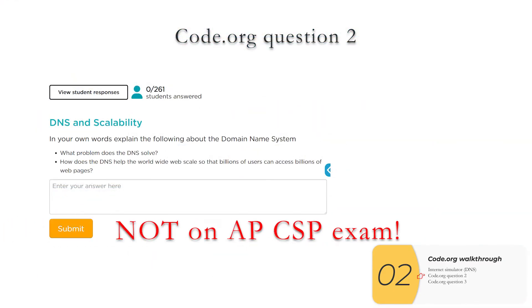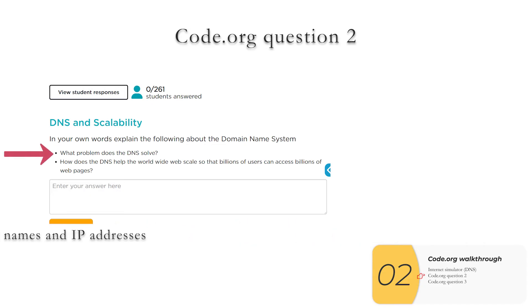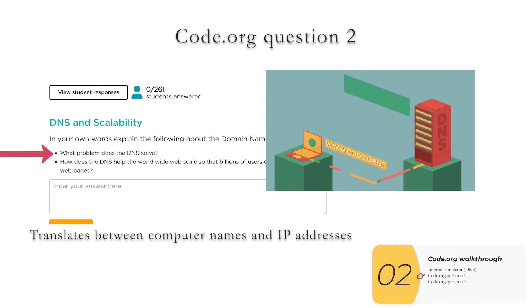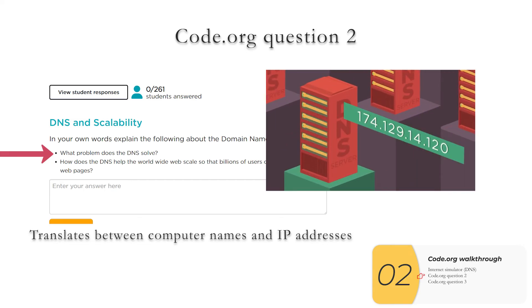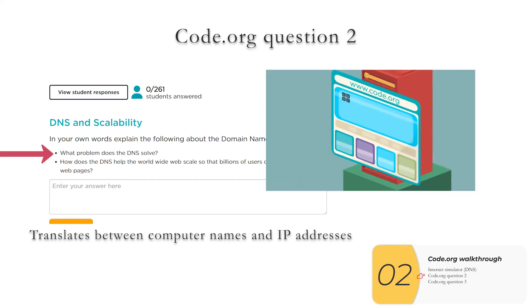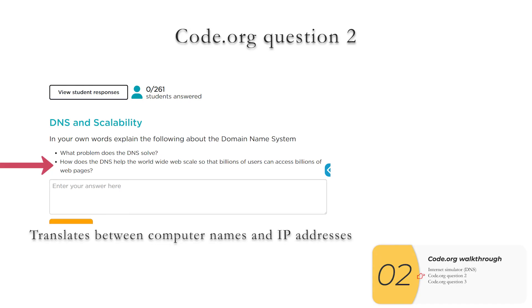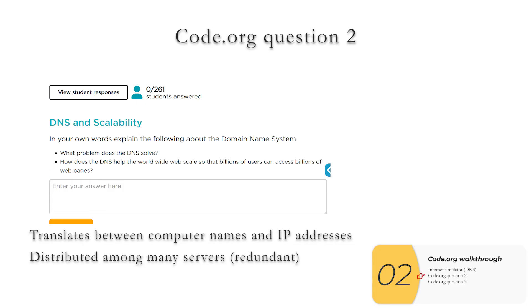Here's the Code.org question — remember, this stuff is not on the APCSP exam, but they want you to explain: what problem does DNS solve? It solves the problem of translating between computer names, which humans know, and IP addresses, which computers know. How does DNS help the World Wide Web scale so users can access billions of web pages? This information of computer names mapped to IP addresses is spread out among many servers — it's distributed and redundant. The fact that the internet is redundant helps at scale because you don't want a single point of failure. You don't want it to be that if one thing dies, the whole thing dies — that would not be scalable.